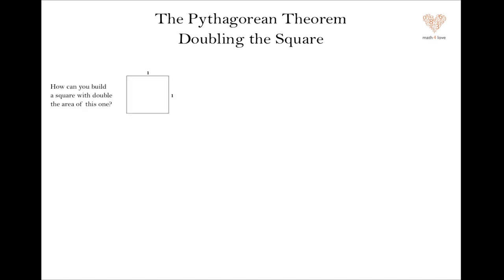How can you build a square that has double the area of some starting square? Let's say we're starting with this one. It's a one by one square. How do we find a square that's double the area?